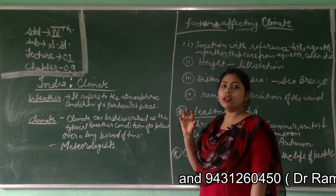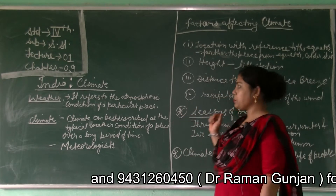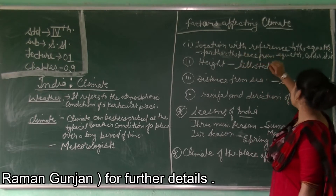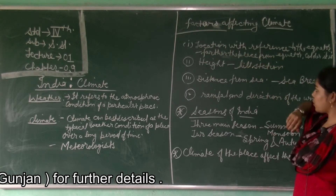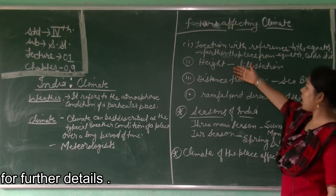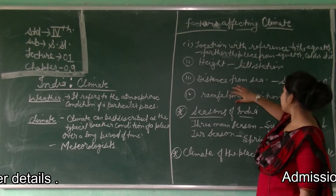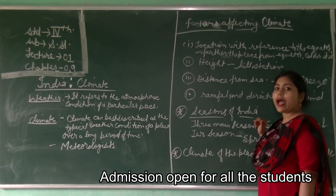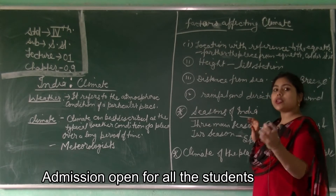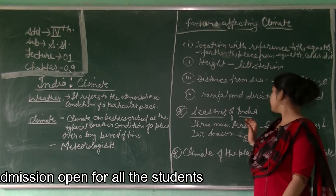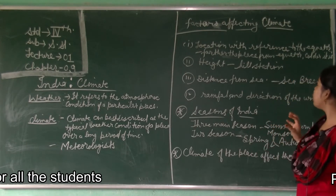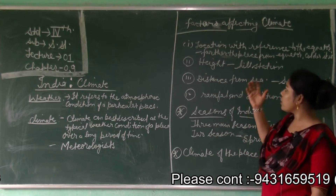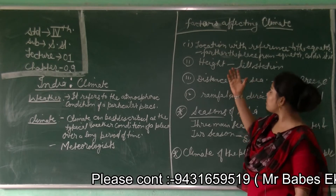There are some factors that affect the climate: location with reference to the equator, height, distance from the sea, rainfall, and the direction of the wind. We will see each of these one by one.